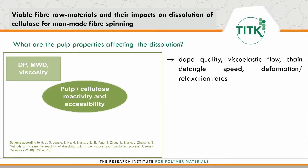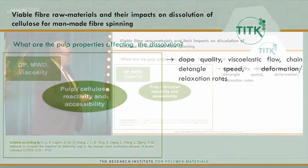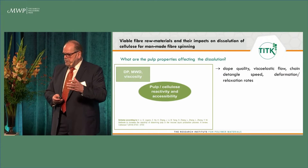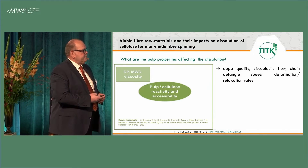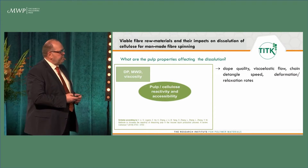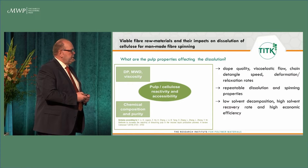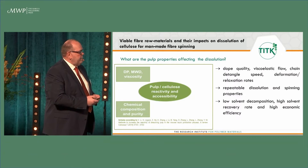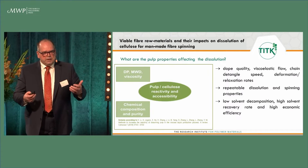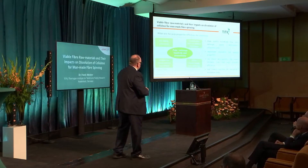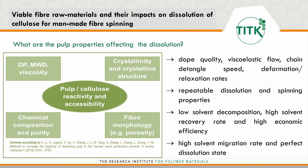These properties affect more or less the dope quality — viscoelastic flow, chain entanglement speed, deformation, and relaxation rates. We have already heard that these are very important values, especially for spinning in the air gap. But also the chemical composition and purity could affect dissolution behavior, especially for a more technical process involving repeated dissolution and spinning cycles. There is also a danger for solvent decomposition, which is mostly caused by the purity of the pulp.